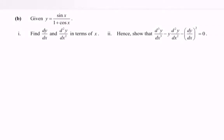Now for part b: y = sin(x) / (1 + cos(x)). For number 1, find dy/dx and the second derivative in terms of x. For number 2, show that the given expression equals 0.